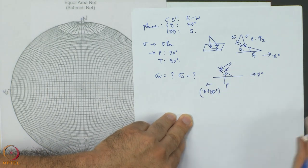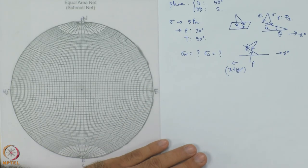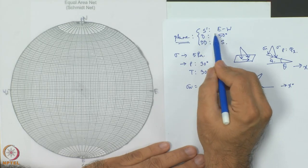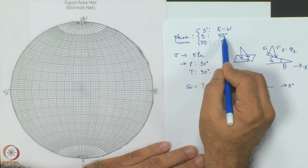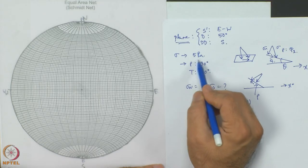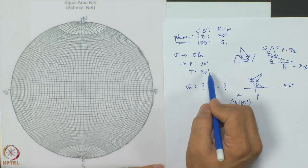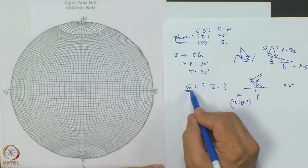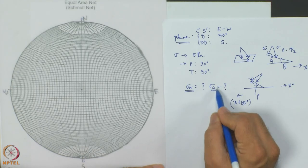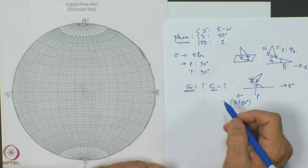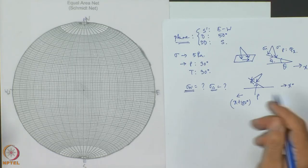Those three cases were done. Now we discuss the fourth problem, which I will solve right now. In this most general case, a plane with known strike, dip, and dip direction is given. Here we are going to solve using the stereonet — on the green board I gave the hint; the actual problem solving will be done now.